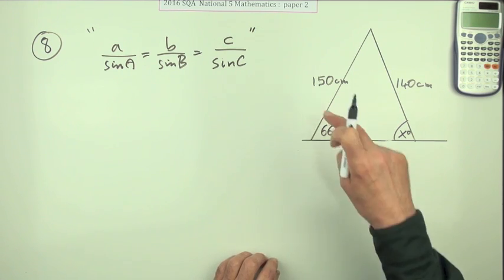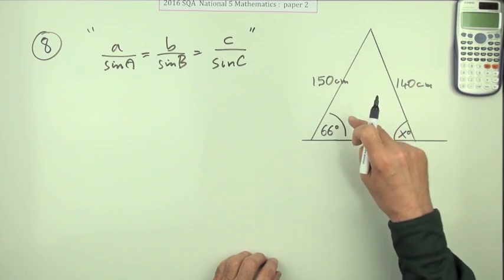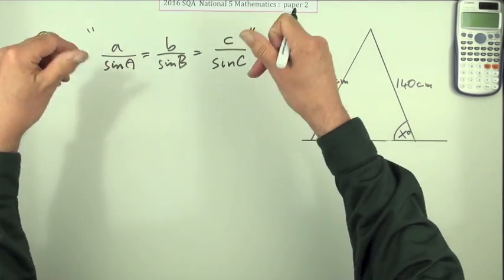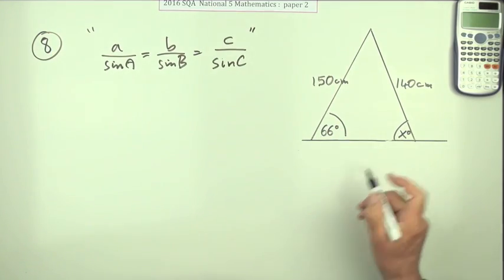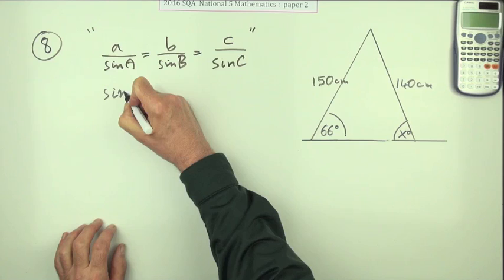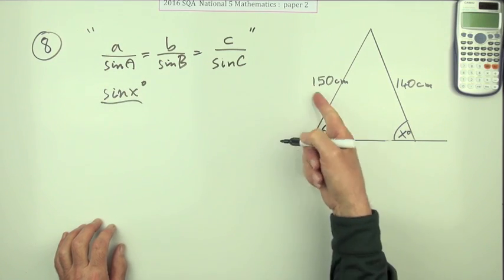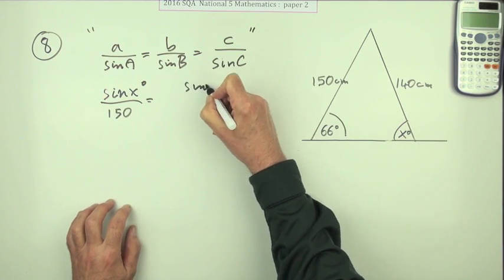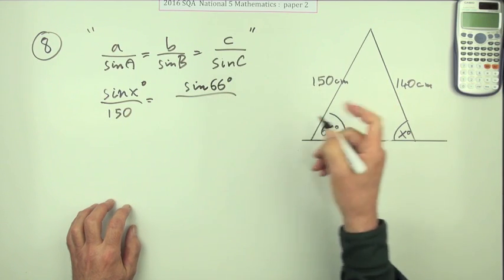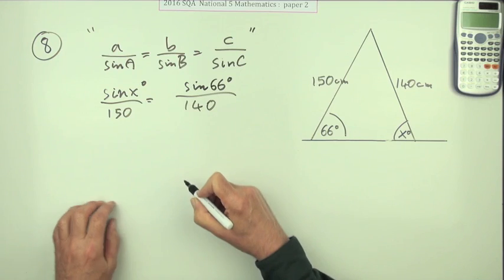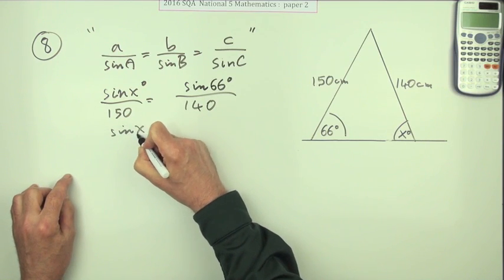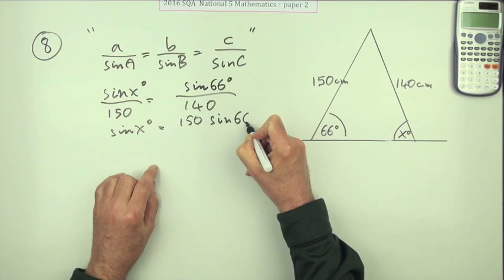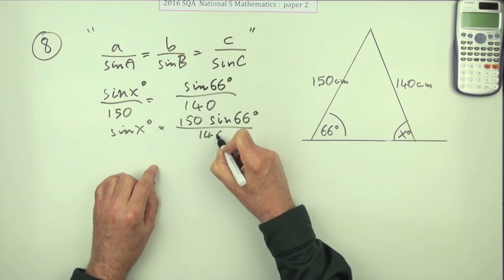So I know that 150 over sine that will be the same as 140 over sine that. The other thing is, you can use that either way round. So I'm going to employ the sine rule upside down and start off with sine X. Sine X over its partner 150 will be sine 66 over its partner 140. Makes the rearrangement easier. So sine X will be 150, sine 66 over 140.